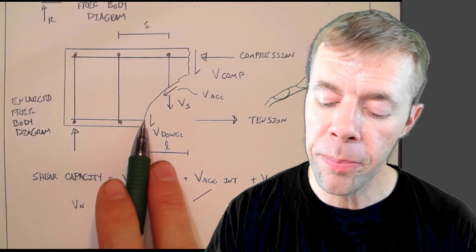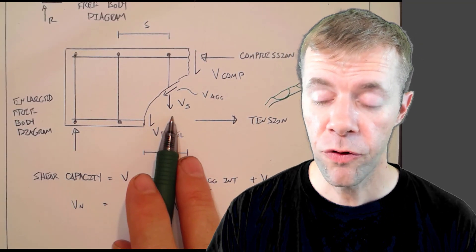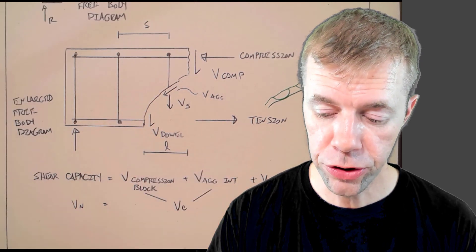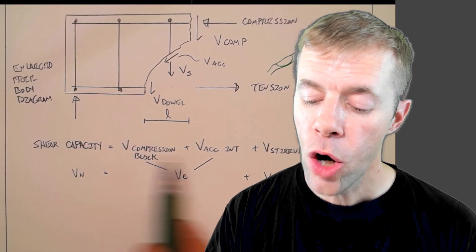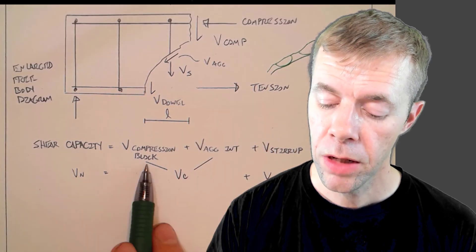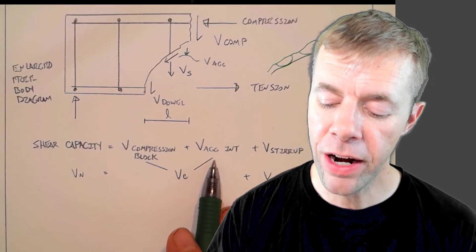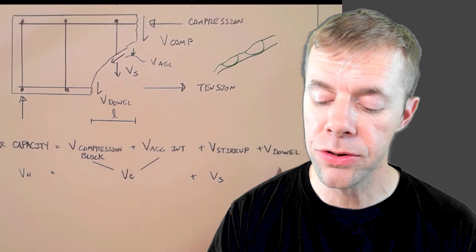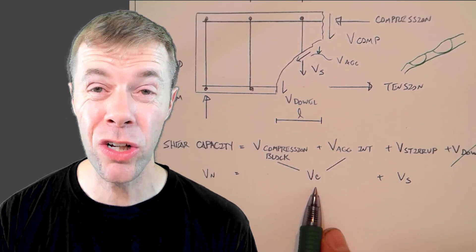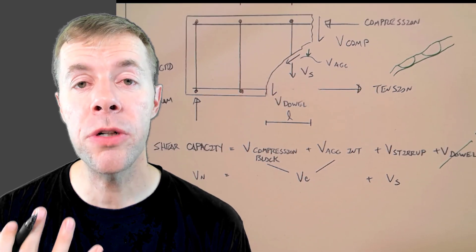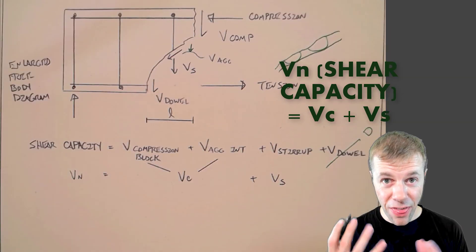Then we have V-dowel — that's the bar at the bottom, the longitudinal tension bar. There's a certain amount of shear it takes to break that bar in half. And then there's V-S — that's the shear from our stirrups, and that's what it takes to break our shear stirrups. We have the S dimension — that's the spacing of the shear stirrups — and the L dimension, which is the length of the crack. Ultimately, we add all these together: V-compression plus V-aggregate interlock, which is the vertical component from that vector, combined into V-sub-C — the shear contribution from the concrete. Then we add V-sub-S from the stirrups. Add both together and that's how we get our total shear capacity. That is shear in a nutshell.